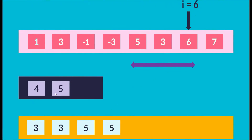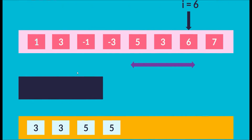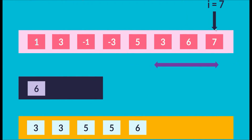i is incremented to index 6, element 6. Since 6 is greater than index 5 (value 3), we pop 3 out. The element at the back is now index 4 (value 5), which is also smaller than 6, so we pop 5 out as well. The DQ is empty, so we push index 6. The maximum at the front is index 6, element 6, so we push 6 onto the output array.